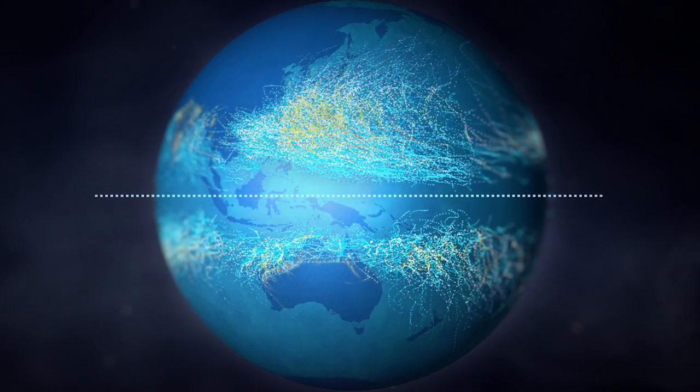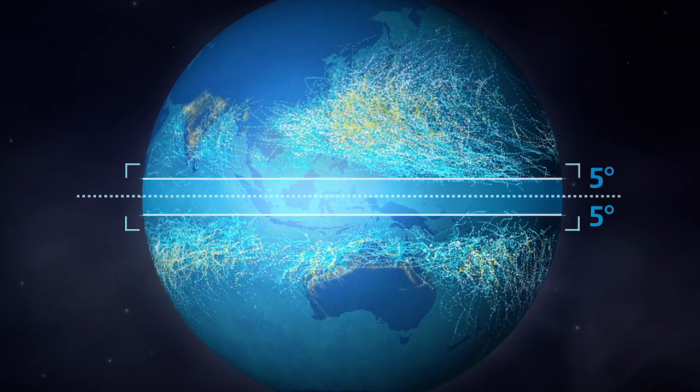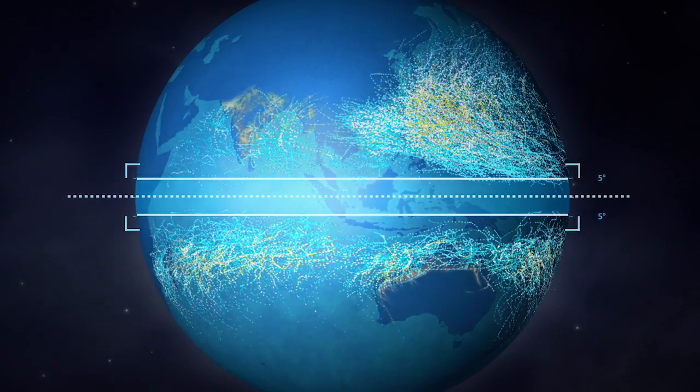Typically, there isn't enough spin within about five degrees on either side of the equator for a tropical storm to form, though every now and again, a storm defies the odds.